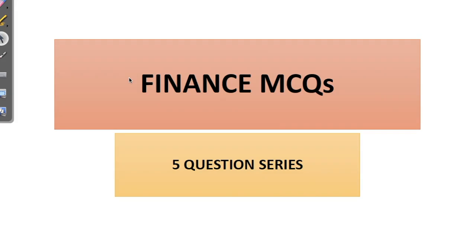Hi friends, I'm Srishti Jain and today we are going to start five questions of finance. Today the questions are really interesting and they relate to the factors affecting inflation, capital formation, degree of financial leverage and kinds of capital structure theories, the rule of 72, and securities and bonds. Do watch the video till the end to understand all the concepts in detail.